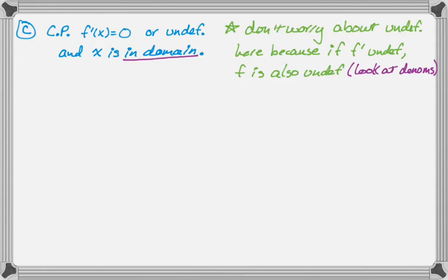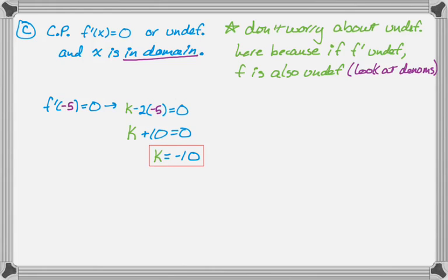So all we really are concerned with is f prime of negative 5 equaling 0. And if that's the case, that really just means that k minus 2 times negative 5 equals 0. The denominator crosses out, or cross-multiplies out because it equals 0. So k plus 10 equals 0, so k must equal negative 10.